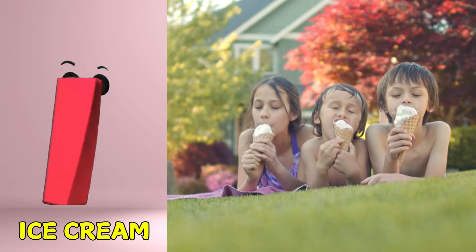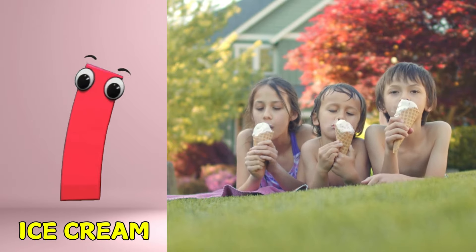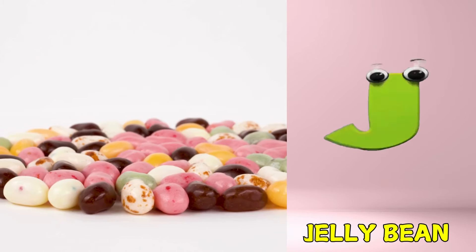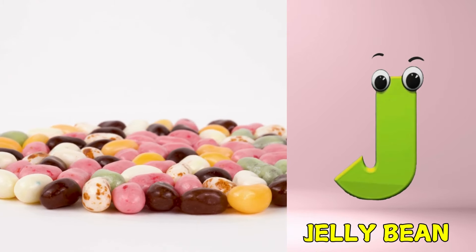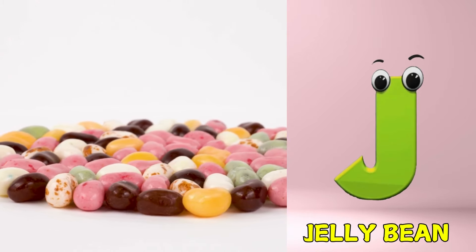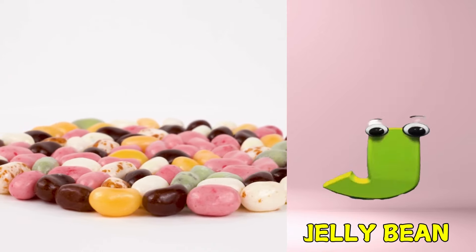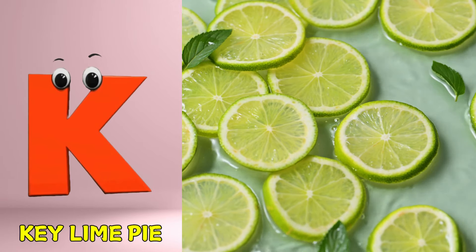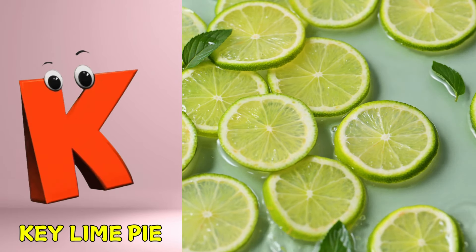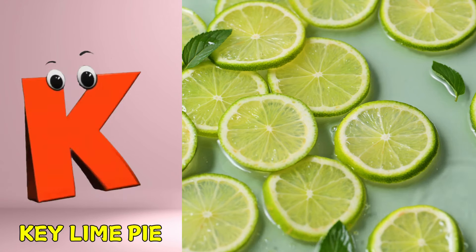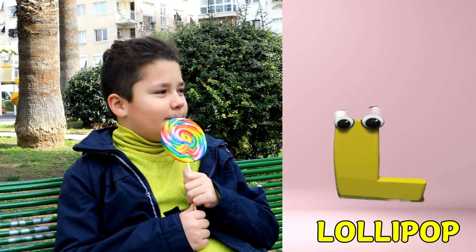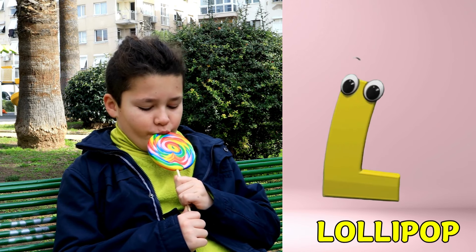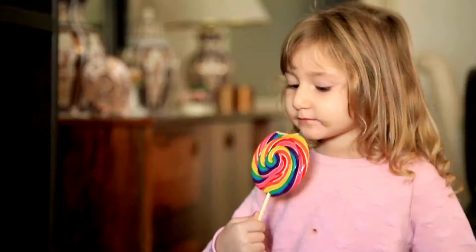I is for Ice Cream. Ice Cream. J is for Jelly Bean. Jelly Bean. K is for Key Lime Pie. Key Lime Pie. L is for Lollipop. Lollipop.